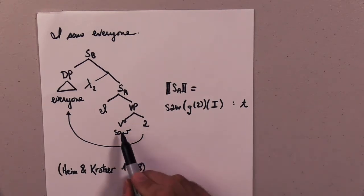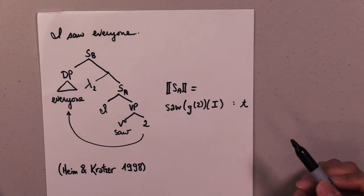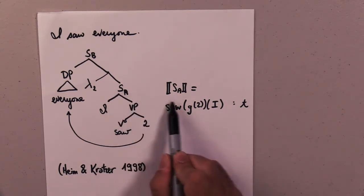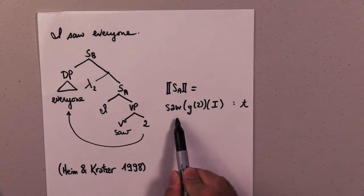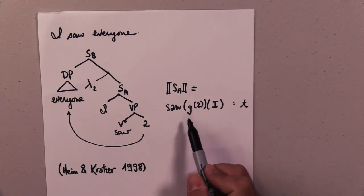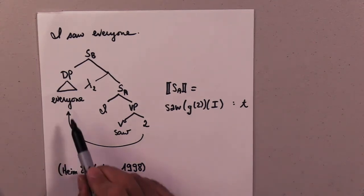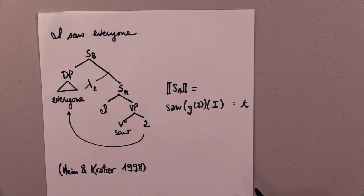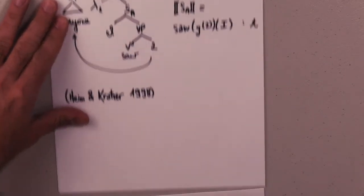So if we build this sentence in a straightforward fashion and we use the assignment G, then the denotation of this sentence here would be something like this of type T. This is a finished proposition. So how do we unfinish it so that we can plug it into 'everyone'? That's where abstraction comes in.